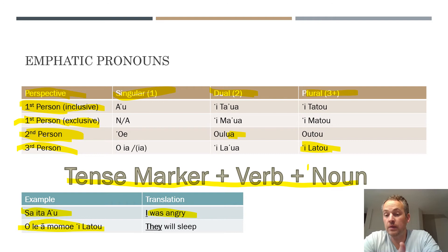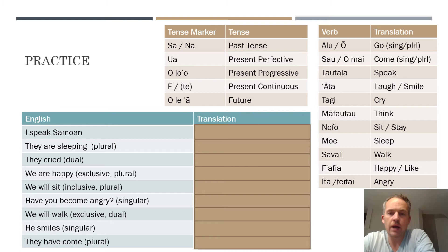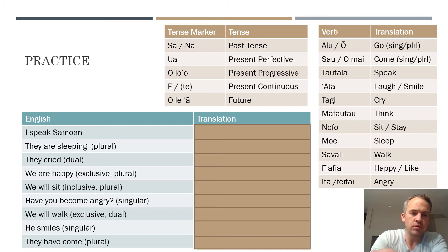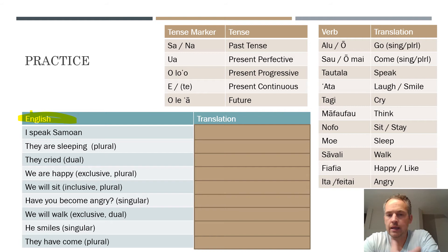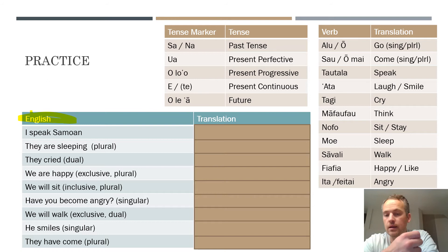Now let's do a practice exercise to help cement this. I've got some English sentences on the left-hand side of the table, and the objective is to come up with a Samoan translation. I'll reveal the answers as we go through. I'd recommend printing out the slide, writing down your Samoan translation, pausing the video, taking as long as you need, and then checking if you got it right.